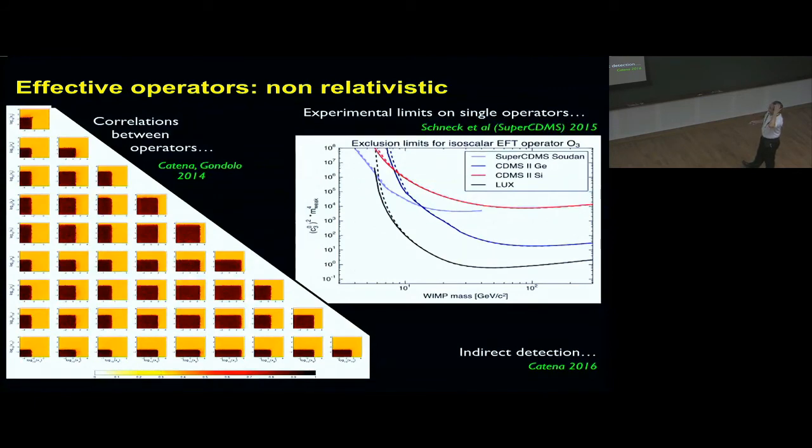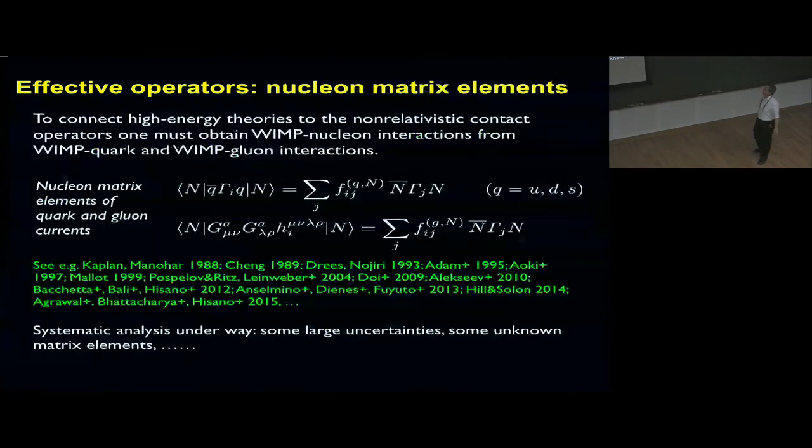The phenomenological studies have been done already. There's limits from experimentalists, SuperCDMS, on each of these effective operators. On the left is a study I did a few years ago of correlations between operators. Our conclusion was that when we will have data, then something could be said—at the moment not much. There's also studies in indirect detection and so on. This continues. The next step in this endeavor is to connect the effective operators at the non-relativistic level to the fundamental theory. This has to go through the nucleon matrix elements of the quarks and gluons. There are some compilations of these, but they're incomplete.